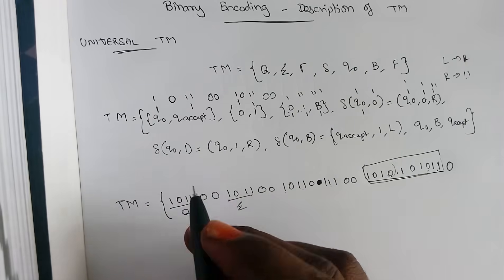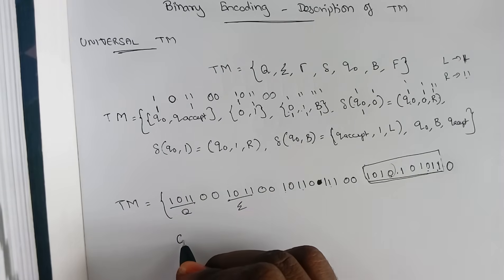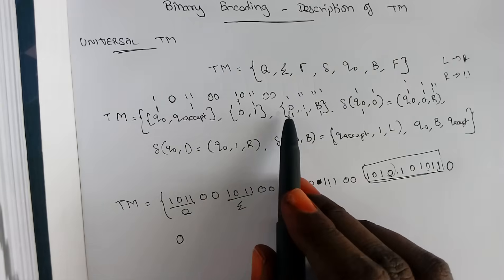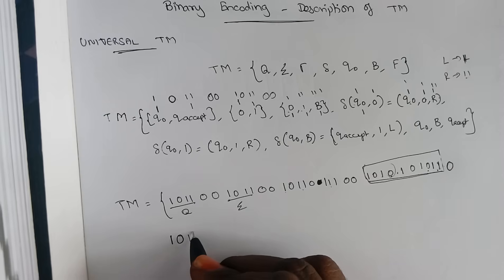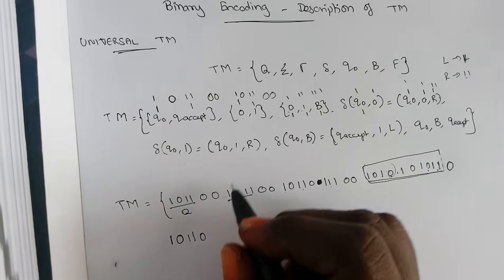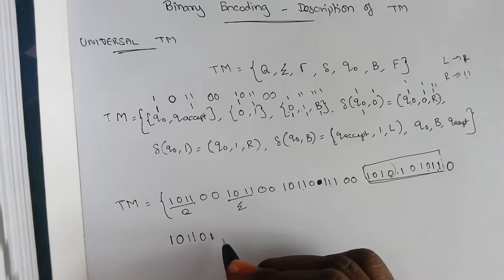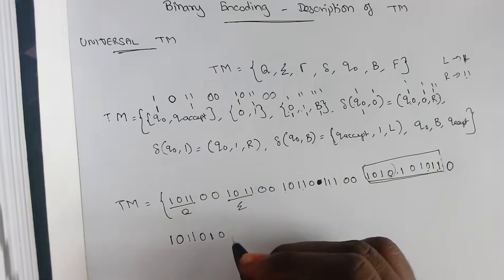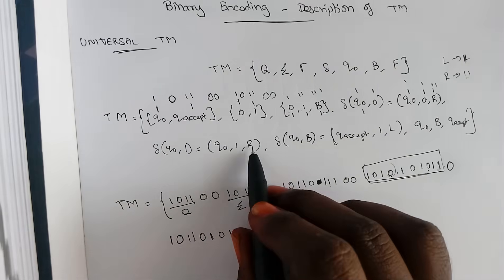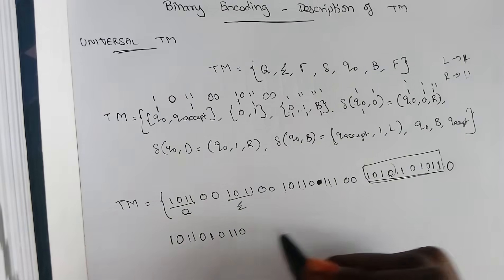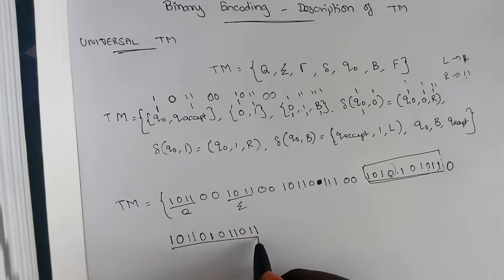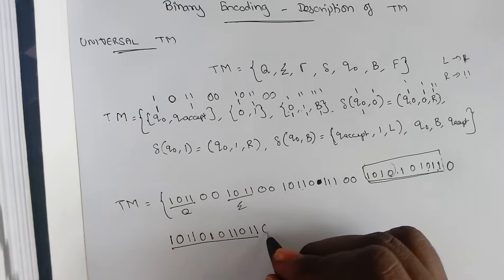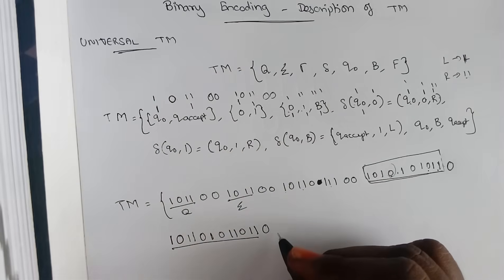When zeros are encountered it describes the end of your first transition and the beginning of the second. For the second transition: q0 takes the value of a single one, and 1 takes the value of two ones — so it is one zero one one, separated by q0 as a single one again, and one one to represent it. The right side move is represented using two ones.